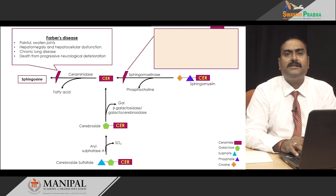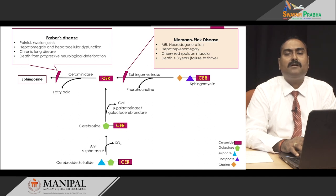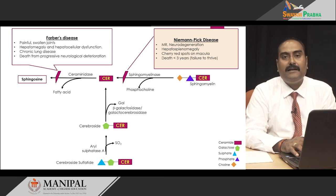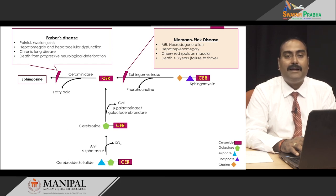If there is deficiency of sphingomyelinase, then we get the disorder Niemann-Pick disease. The characteristics of Niemann-Pick disorder are mental retardation, neurodegeneration, and hepatosplenomegaly — that is, enlargement of both liver and spleen. A very unique characteristic of Niemann-Pick is the presence of a cherry red spot on the macula. Again, there is failure to thrive and death generally occurs within 3 years of age.